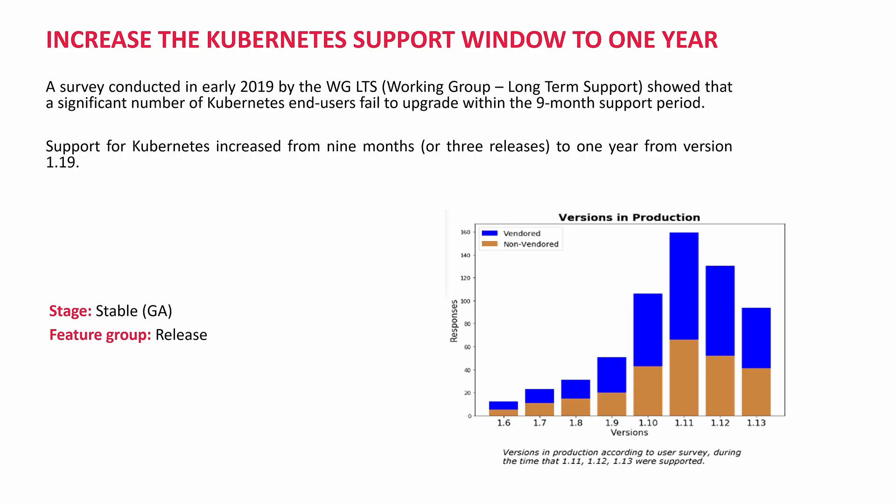First, we talk about a few enhancements that became stable, GA. A good news for Operations Managers: previously, Kubernetes supported a specific version only for the 9-month period. Now, they extended the period to 1 year. It will be 4 releases to support. Look at the graph here. It was done by the working group for long-term support community.